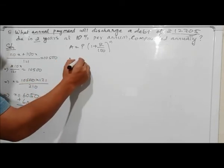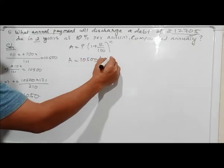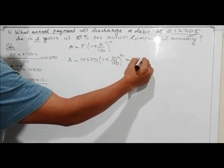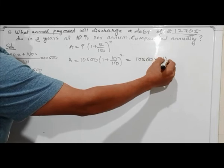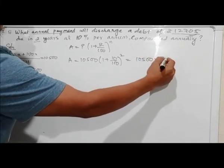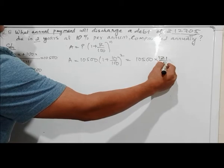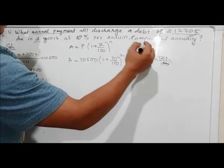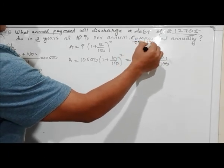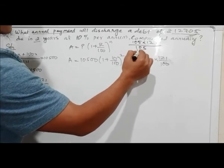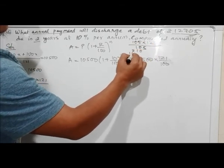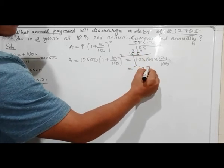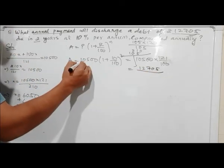So one plus r by hundred to the power 2, which gives 121 by 100. Into eleven squared equals 121 by 100 squared. The amount builds to 12705 using this compound formula.